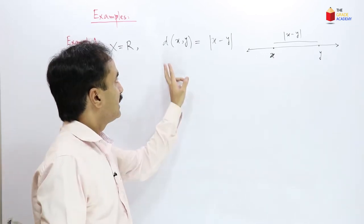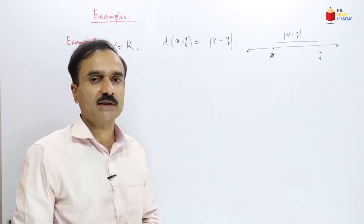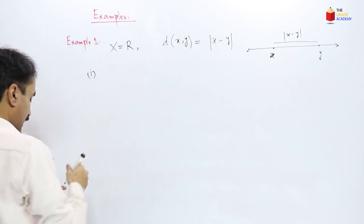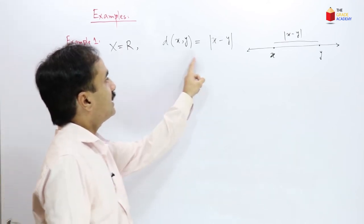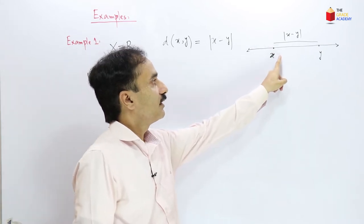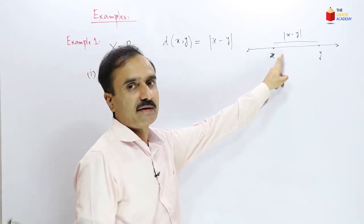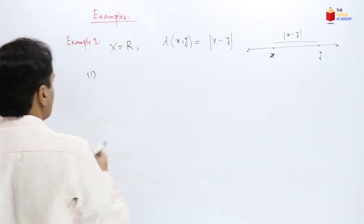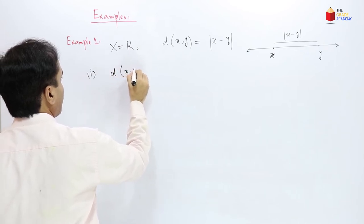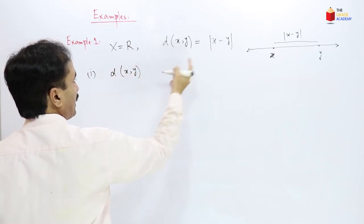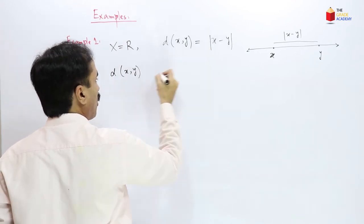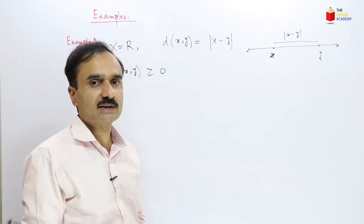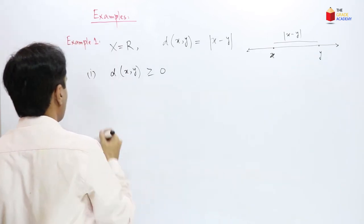Let us see if this distance is always greater than or equal to 0. Since |x − y| is never negative, d(x,y) = |x − y| is always greater than or equal to 0. So the first condition of a metric is satisfied. Number 2.